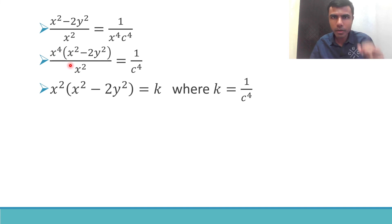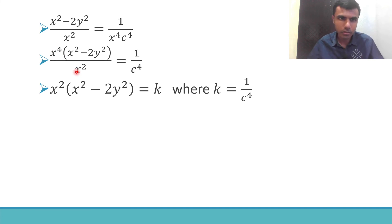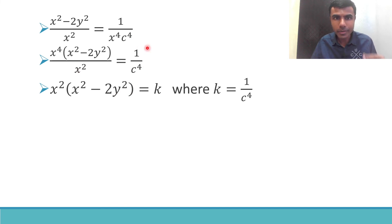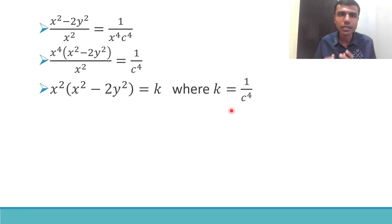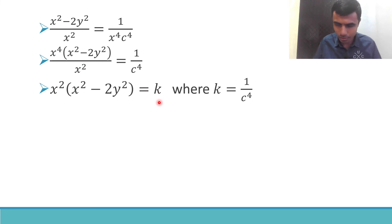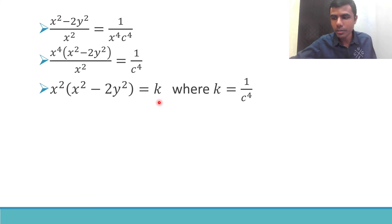Sending x⁴ to the LHS: x⁴ divided by x² is x², so x² times (x² minus 2y²) equals 1/C⁴. Taking 1/C⁴ as another constant k so that it matches the textbook answer: x²(x² minus 2y²) = k. Thank you very much for staying with me up till now.